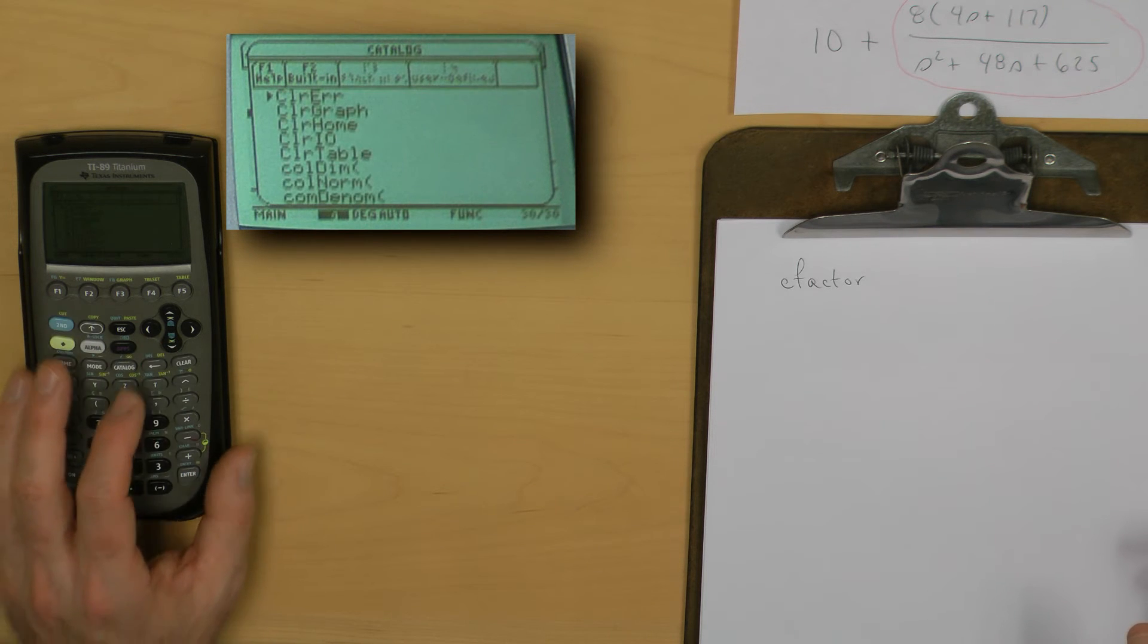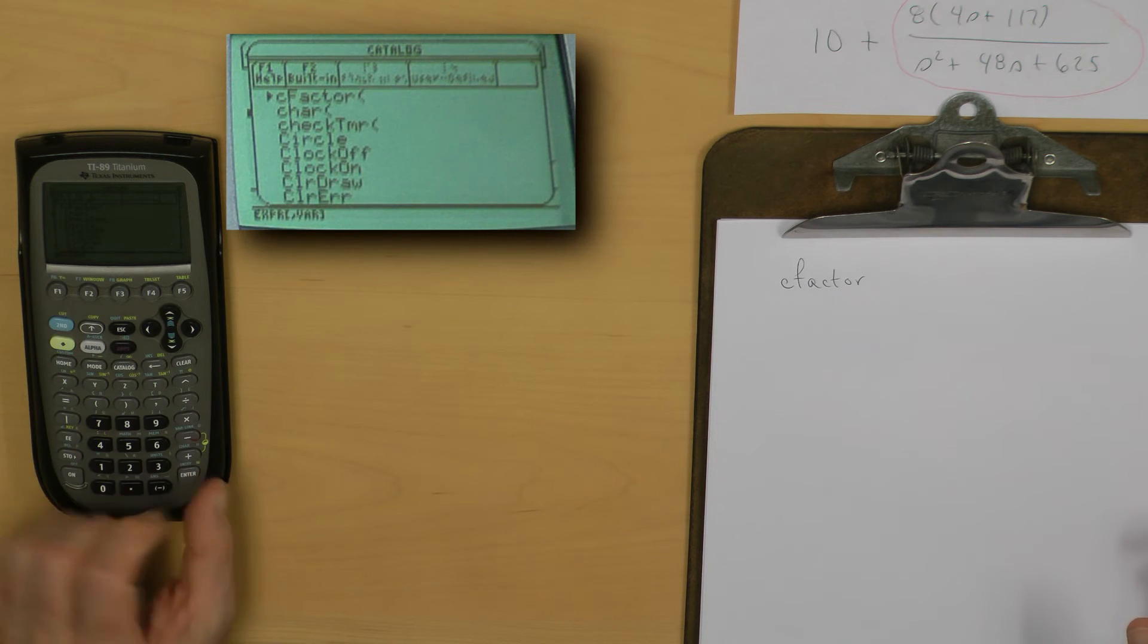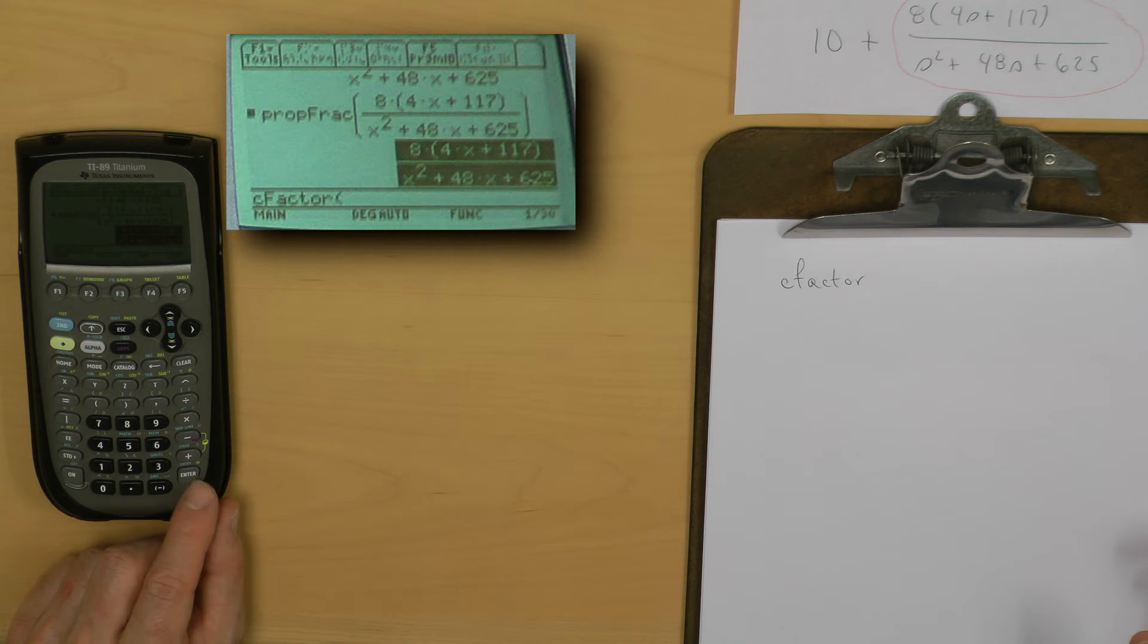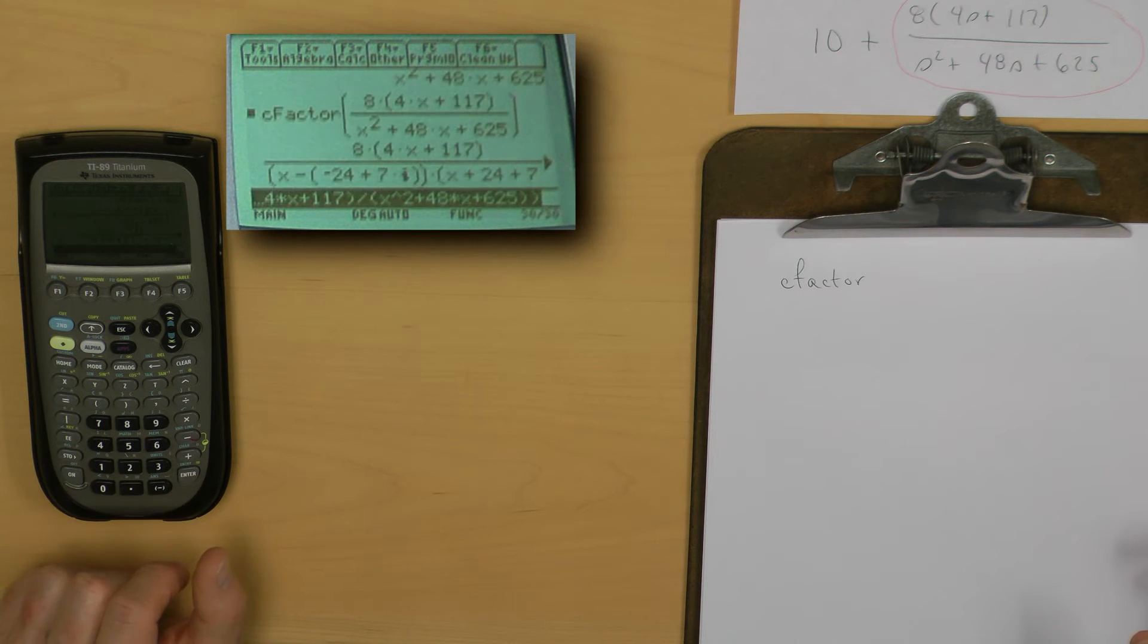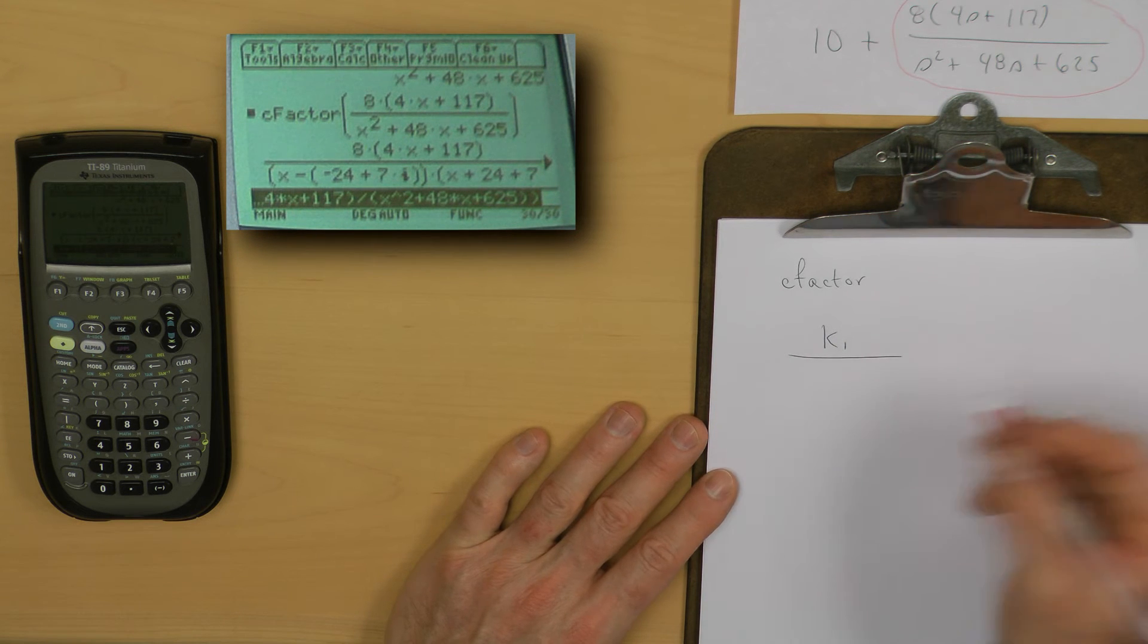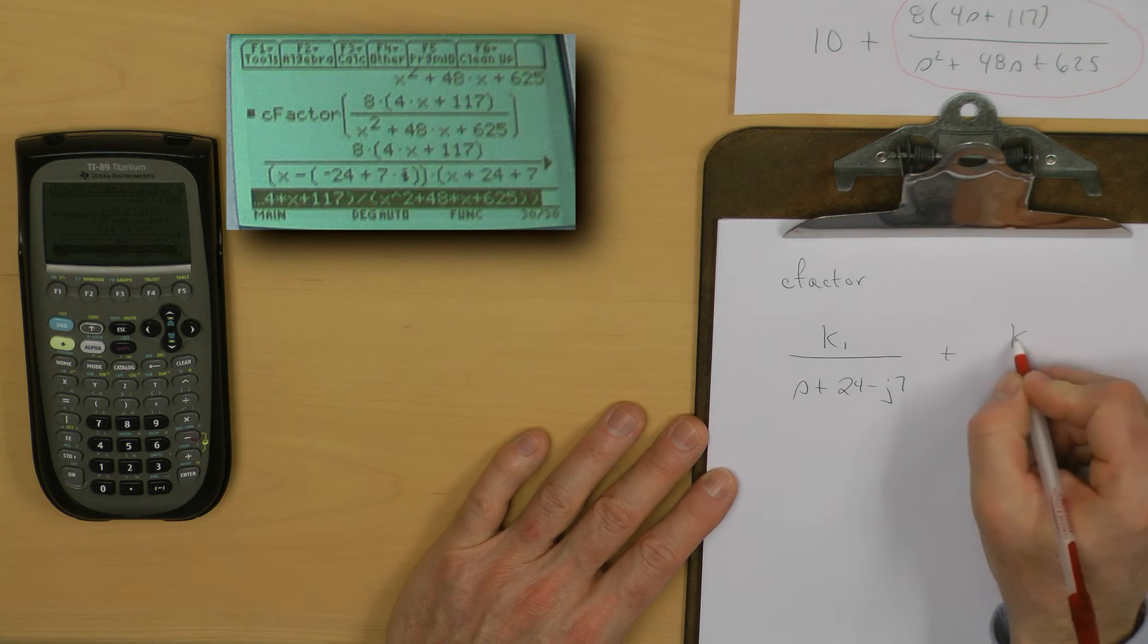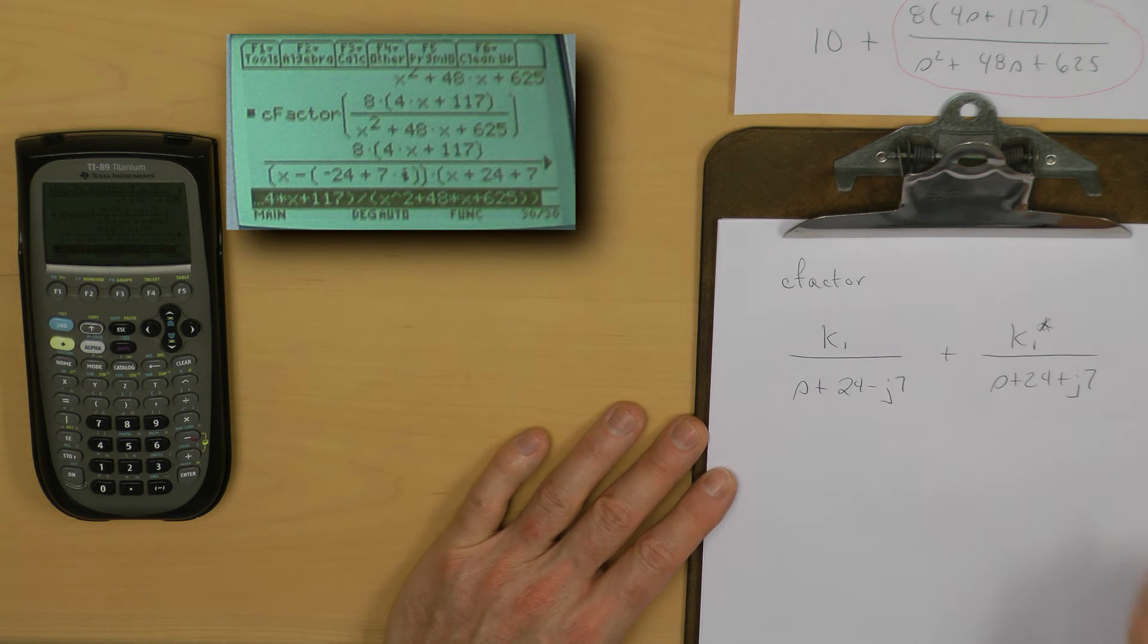I will now find or go back and grab that expression. I now have the complex factor expression in the calculator. What I need to do is fit it to K1 over S plus 24 minus J7 plus a K1 star over S plus 24 plus J7.